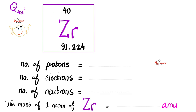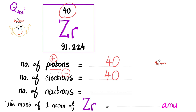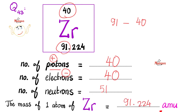Let's first answer the question from the previous video. Here is zirconium. What are the number of protons? Please pause and try to answer yourself. The atomic number gives us 40 protons. How about electrons? Also 40. The number of positively charged particles equals the number of negatively charged particles — that's why this is a neutral atom of zirconium. How about the number of neutrons? Roughly speaking: mass number 91 minus 40 gives about 51 neutrons. The mass of one atom of zirconium is the atomic mass: 91.224 atomic mass units.